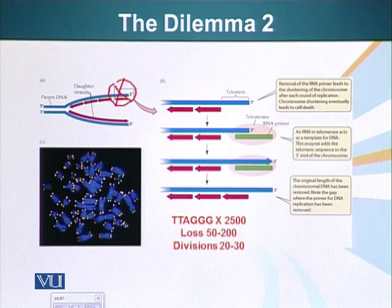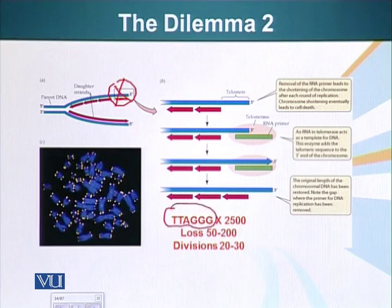Tandem is basically like carts on a train — one after another. So here, this sequence present at the very tips of the chromosomes is repeated. It is the same sequence repeated about 2500 times.